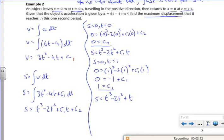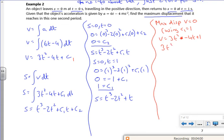So in that case then, I've worked out c1. Now c1 was 1, wasn't it? So knowing that c1 is 1, I'm going to use the fact that my max displacement is when v is 0. So my velocity is 3t² - 4t + 1. That's equal to 0.